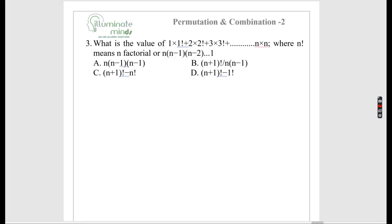What is the value of the expression where the sum equals factorial n? There are two ways — proving it or testing options. Taking the sum till n=2: 1×1! = 1, plus 2×2! = 4, giving result 5. Now we check which option gives 5 when n=2. Option A gives 2×1×1 = 2 — not correct.